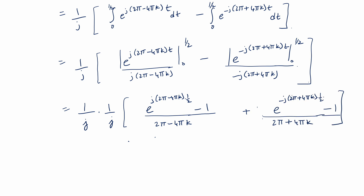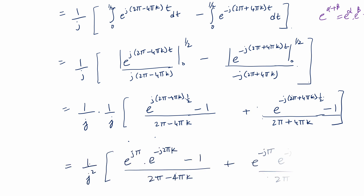We need to evaluate e^(j(2π − 4πk)(1/2)). Using e^(α+β) = e^α · e^β, we decompose this exponential as a product: e^(jπ) · e^(−j2πk), and similarly for the other exponential term.